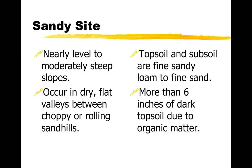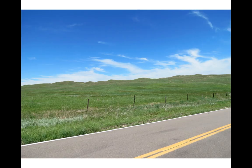The next site is sandy, and these will usually be pretty flat sites. They can occur with some slope, but we usually find them in a valley between other hills, so they're kind of protected. The topsoils and subsoils here will be a fine sandy loam to a fine sand — not as coarse as the sand site. And here there'll be more than six inches of dark topsoil, so this is a slightly higher quality soil that can usually produce better plants. Here's an image where rolling hills in the background are sand sites and the flat, protected, lower areas are probably sandy sites.